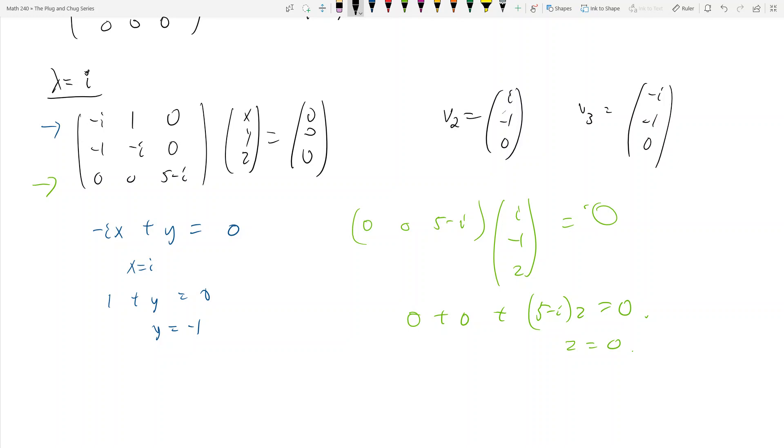Remember that I just take down the complex conjugate of everything. And so this becomes negative i. The complex conjugate of a real number is a real number. It's itself. And then that's going to be my v3, right? So my v3 is negative i, negative 1, 0. And my v2 is i, negative 1, 0. Okay, cool.